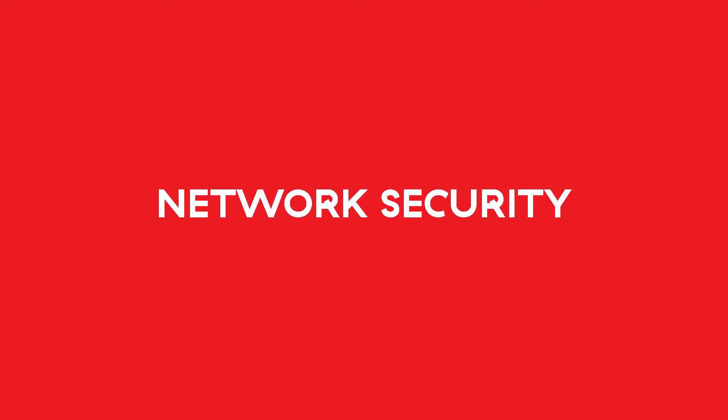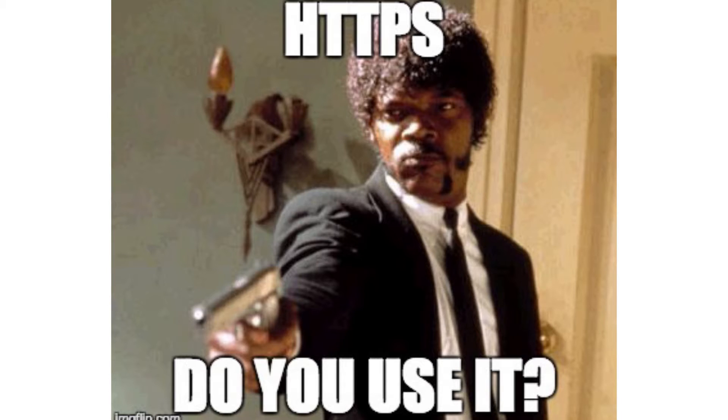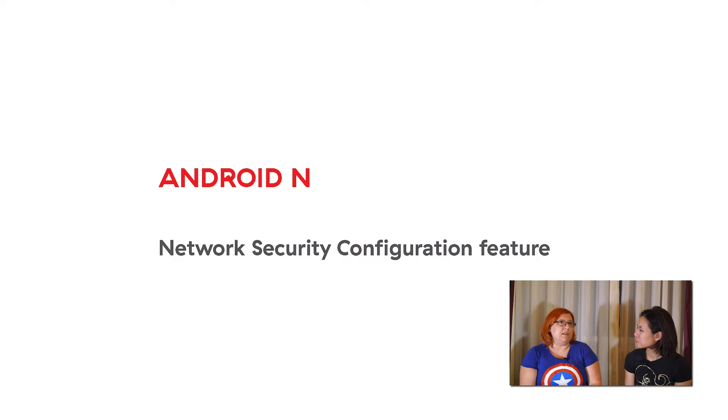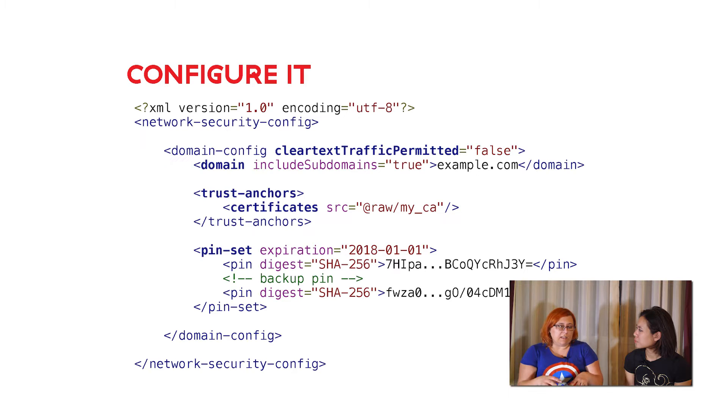The biggest part of the presentation regards network security - basically securing the channel between the application and the servers, which means certificate pinning and making the channel as secure as possible. Now with Android N, we have some great tools - the security configuration file, which basically alleviates all that work from developers. They don't have to pin the certificate manually in their clients; they can just define a configuration file and it just works. Security on Android is really moving in the right direction, with great tools now and the permission system from Android N.